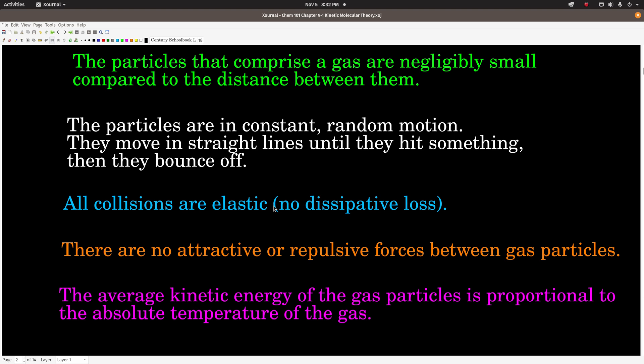First of all, the particles of a gas are really small, negligibly small compared to the distance between them. They're moving all the time in constant random motion. They move in straight lines until they hit something, when they do they bounce off. And when they bounce off, those collisions are what we call elastic collisions. That means no energy is lost to friction or any other place, it's conserved.